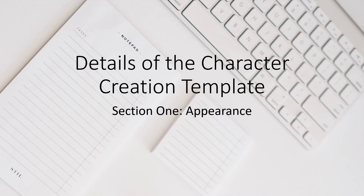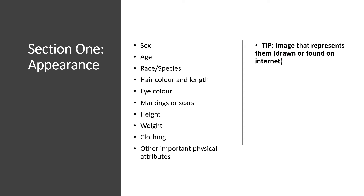Section one is the appearance. This includes the sex, age, race or species, hair color and length, eye color, markings or scars, height, weight, clothing, and other important physical attributes — maybe they have a scar or wear certain colors on their clothing. One tip: what helps some people is to find or draw an image that represents what the character looks like and add it to this section of the character creation template.